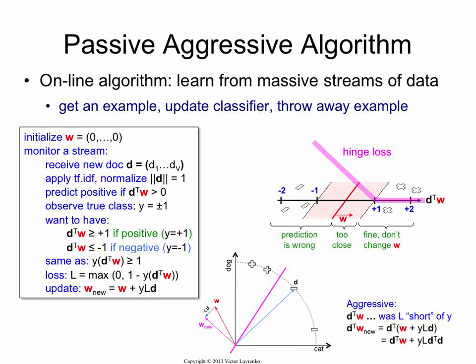Now, what is d transpose d? All of our vectors are unit length, so it's the same thing as a cosine. So d transpose d is just one. So what you get is just d transpose w plus yL.